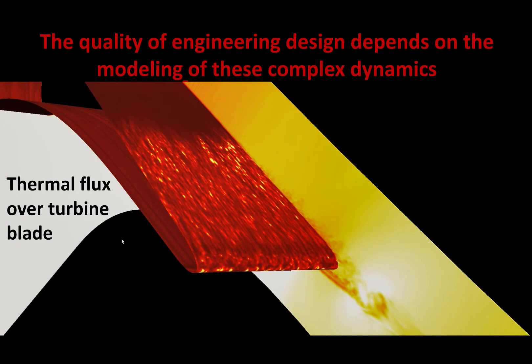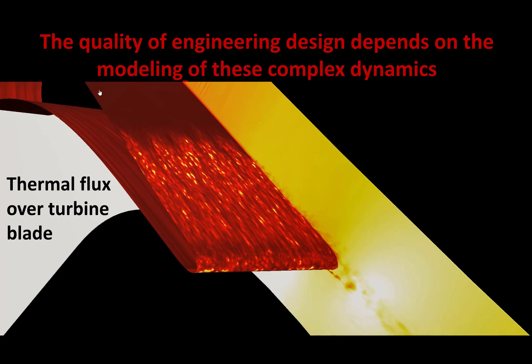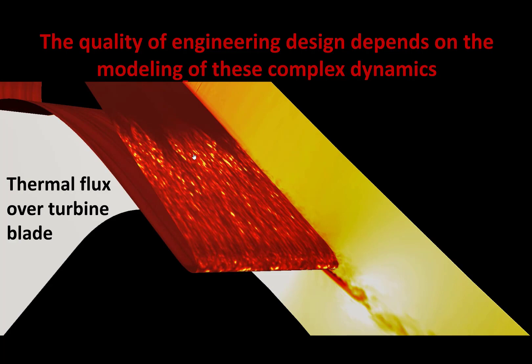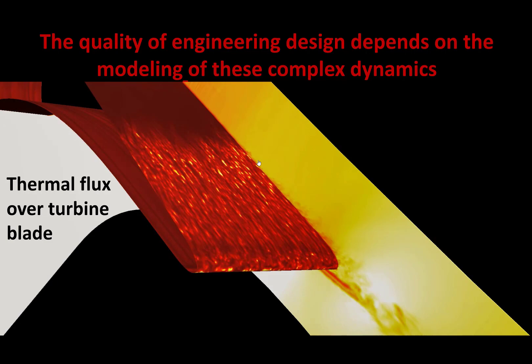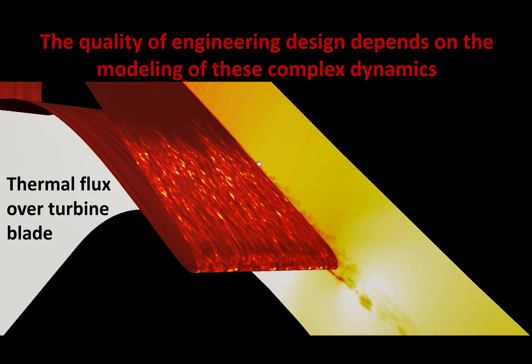These simulations show how the flow actually transitions from a laminar boundary layer to a turbulent boundary layer around the trailing edge of these blades. This is actually why the trailing edge of turbine blades is the most likely place to melt — the flow transitions into turbulence, making the mixing dynamics much more difficult to predict and simulate. Overall, the quality of our engineering decisions on how to design things depends on our understanding and accurate modeling of these dynamical systems.